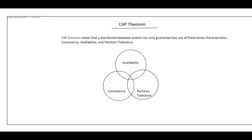CAP theorem states that when we design a distributed system, we cannot achieve all three characteristics — availability, consistency, and partition tolerance — at the same time. Only two can be achieved: either availability and partition tolerance, or consistency and partition tolerance, or consistency and availability. But all three together cannot be achieved. Let's see what each term means first, and then what can or cannot be achieved.